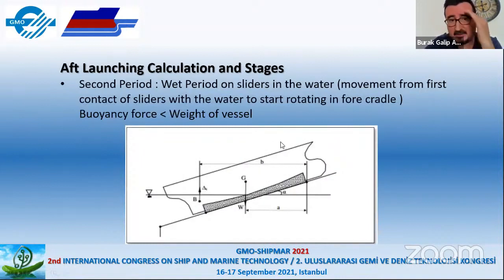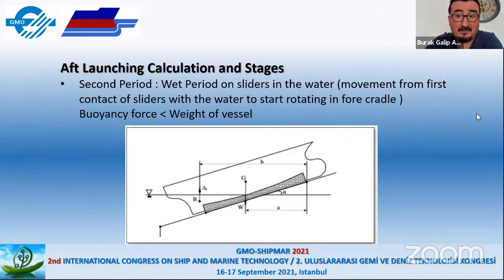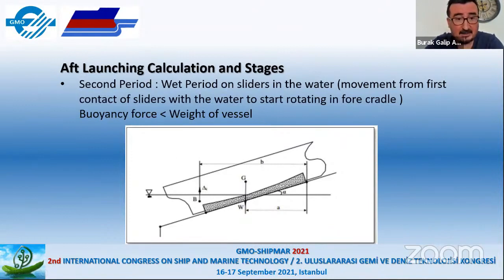The second stage is the wet period on the sliders in the water — from the first contact of the sliders with the water or sea, up to the start of rotation around the forward cradle. In this stage we have both buoyancy forces and the weight of the vessel, with the weight of the vessel being higher than the buoyancy force.